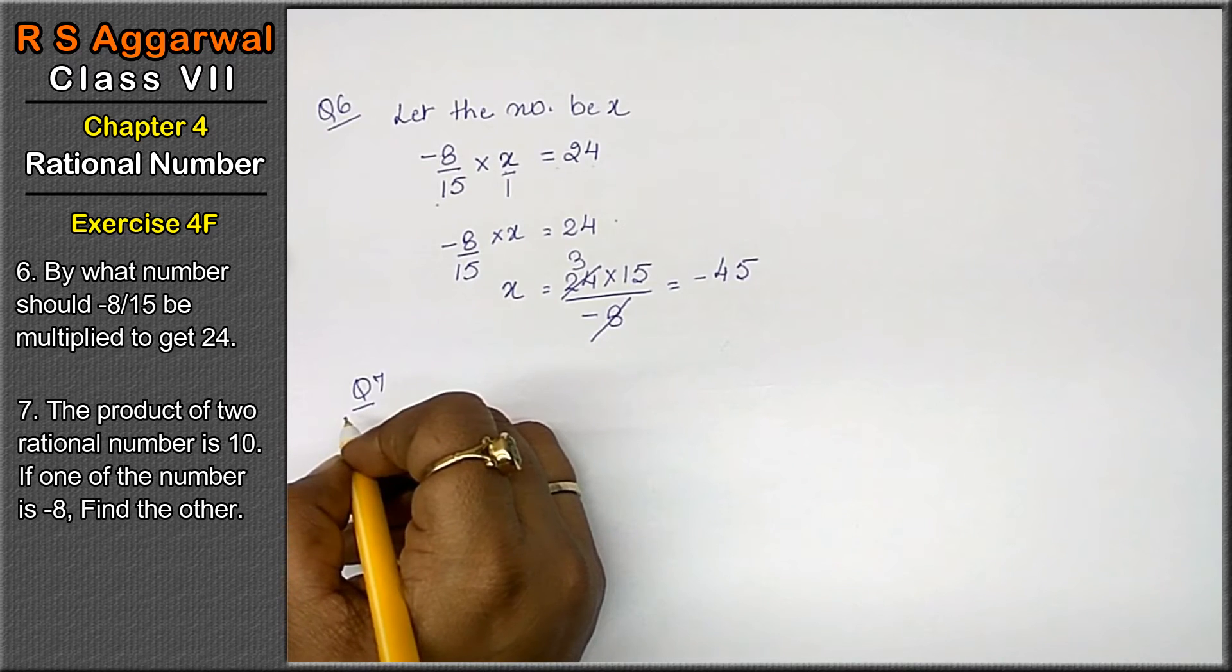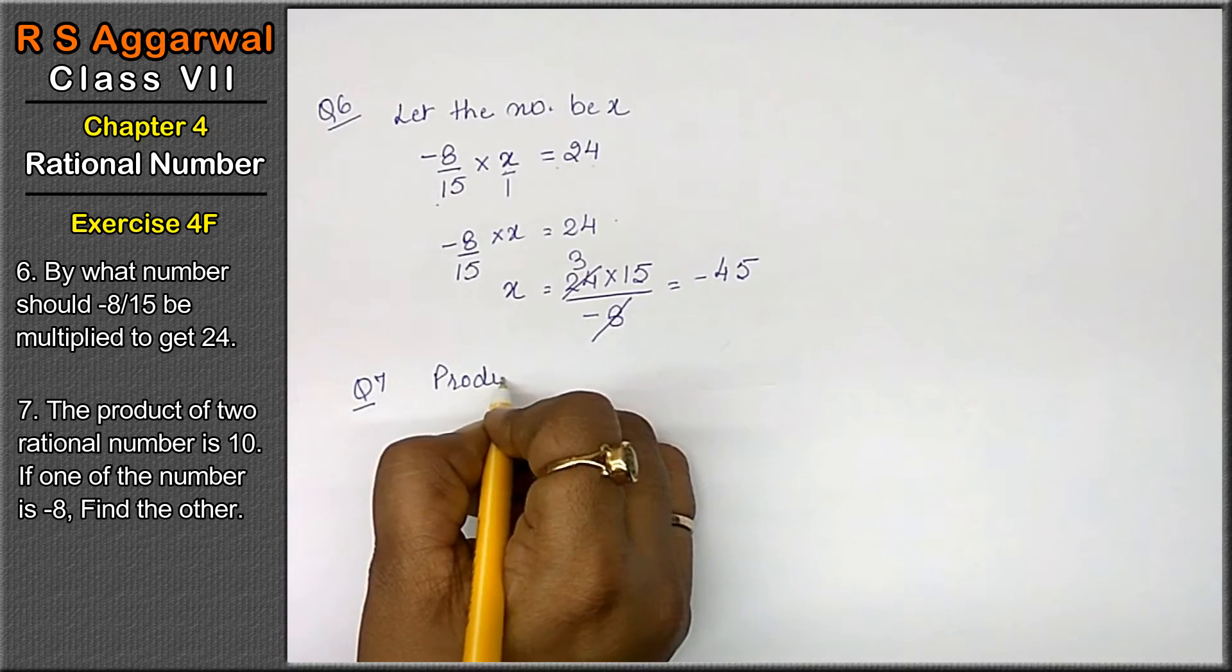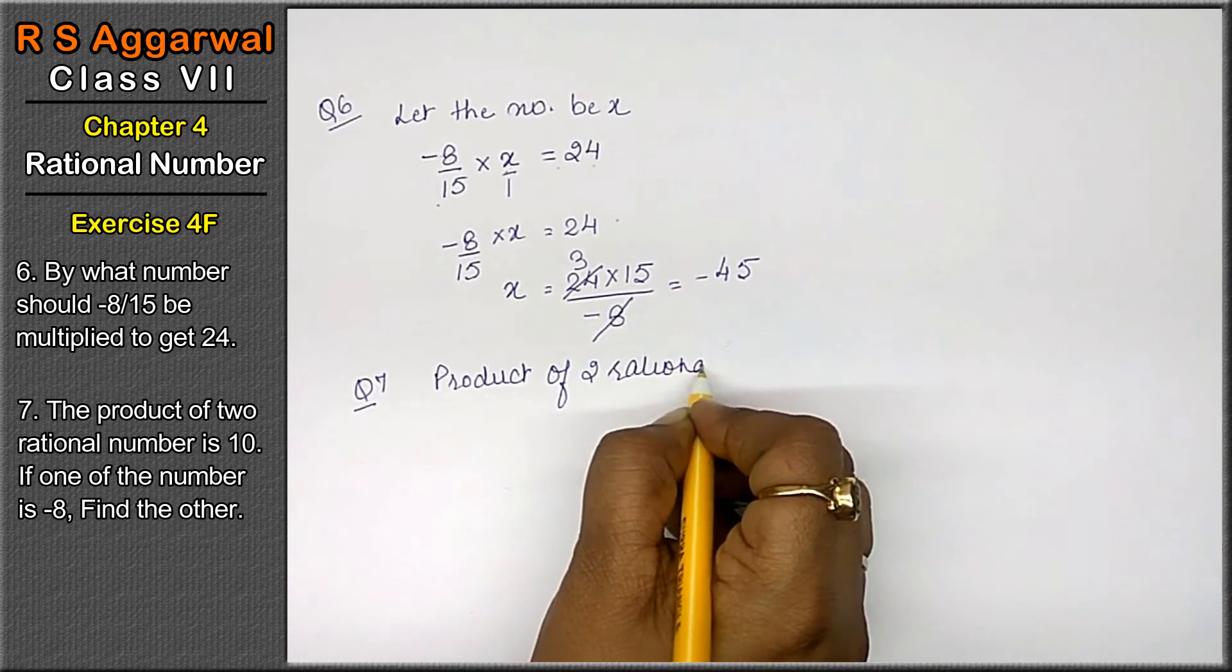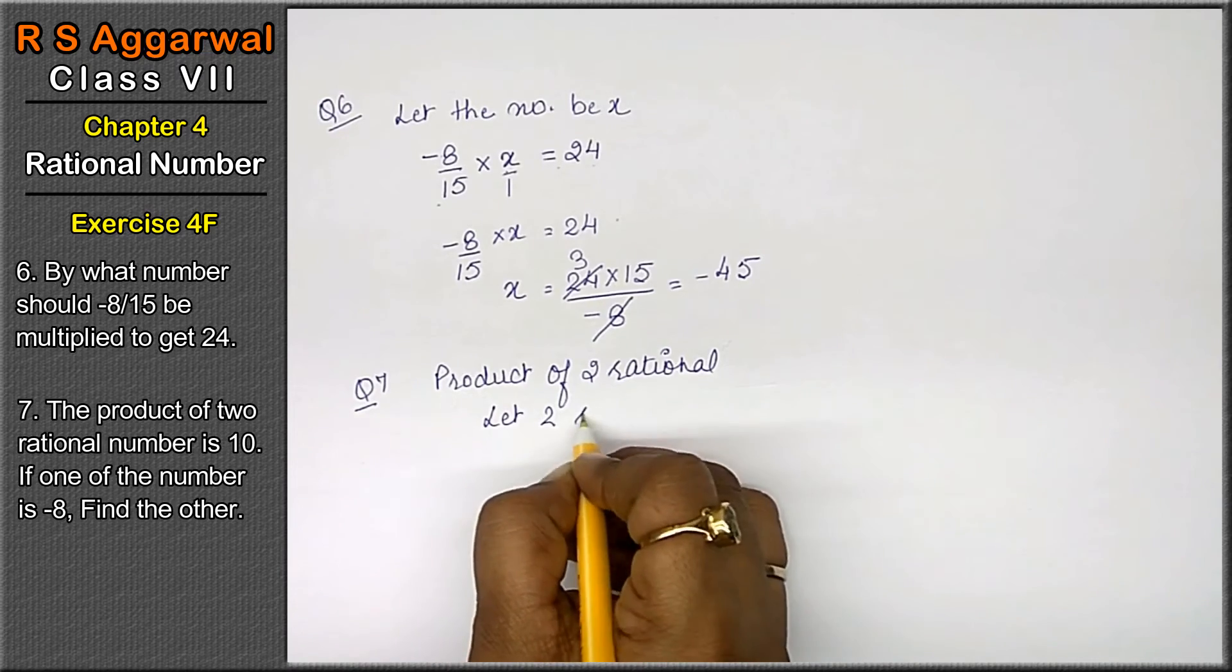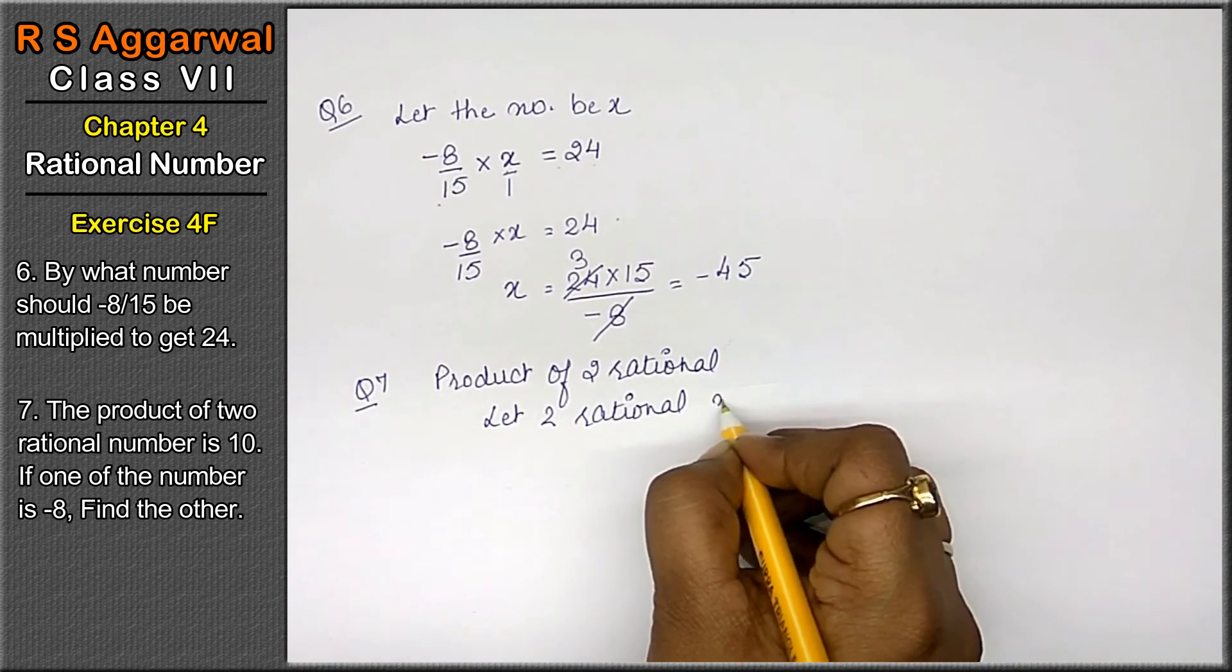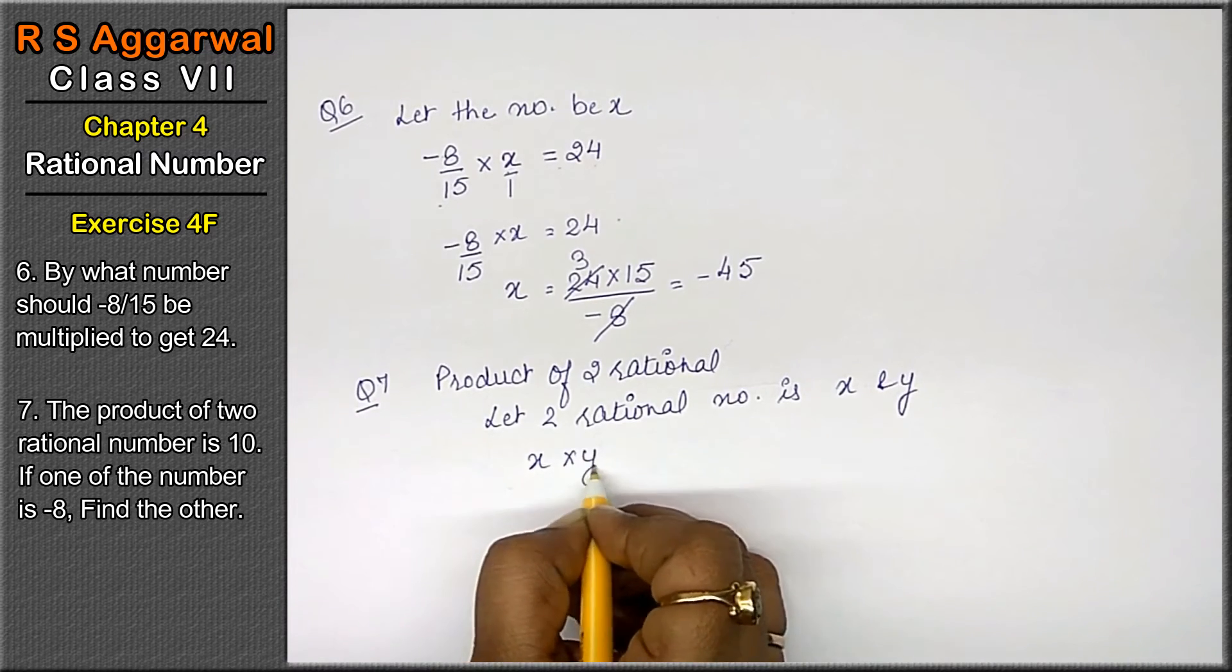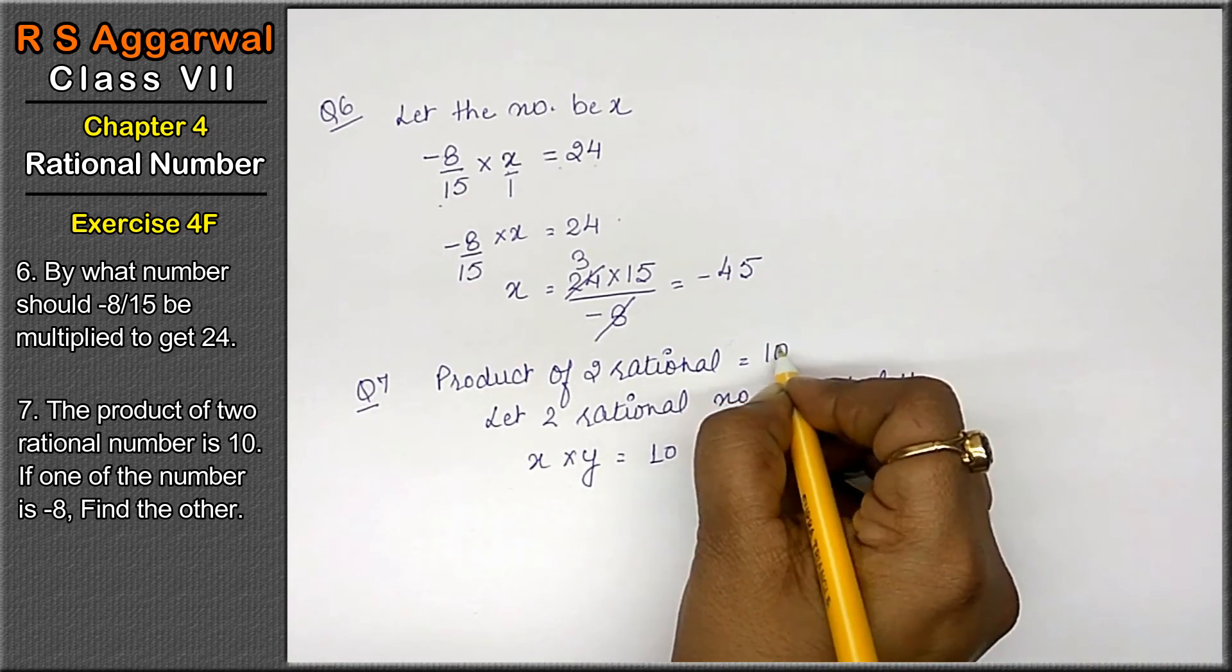The product of 2 rational numbers. Friends, product of 2 rational numbers is, let it be, let 2 rational numbers be x and y. Then x multiplied by y equals to product of 2 rational numbers is 10.